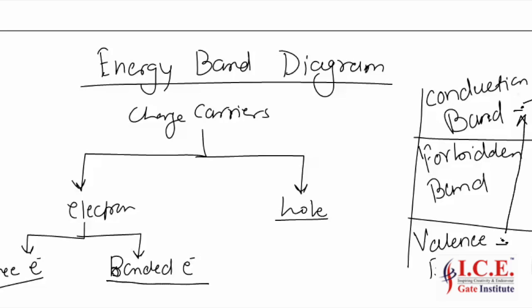If a bonded electron is moved from valence band to conduction band, there will be a deficiency of electron which is called a hole. This deficiency remains in the valence band itself. So the valence band represents the energy of holes present in the material.